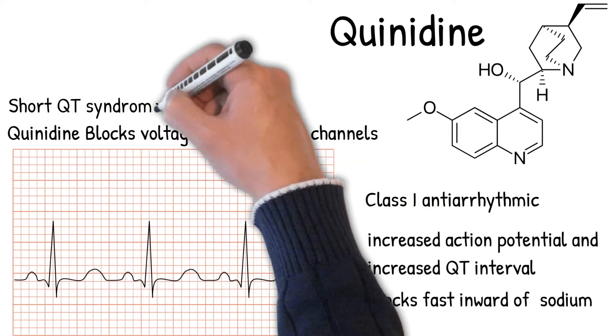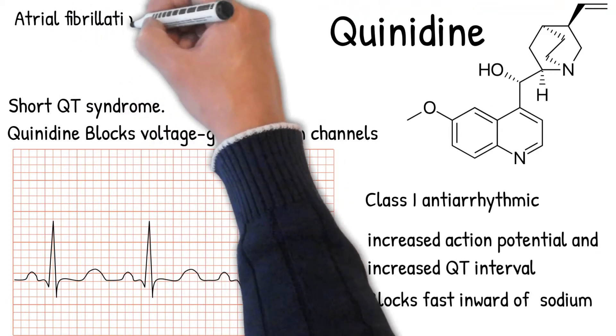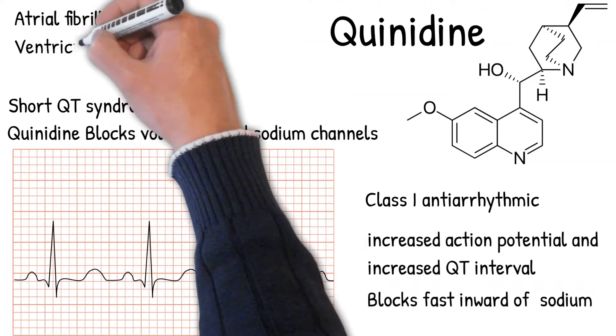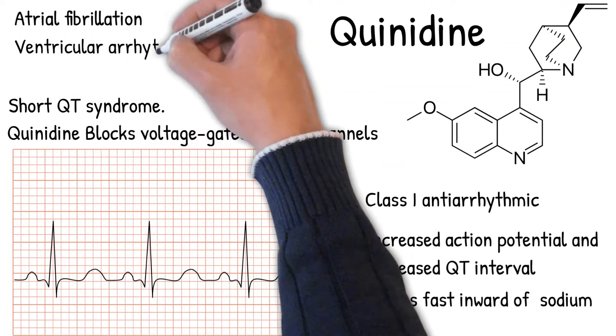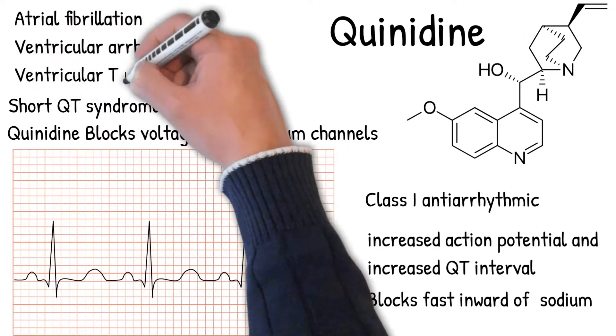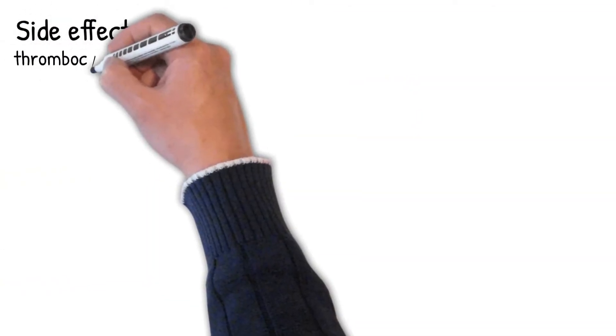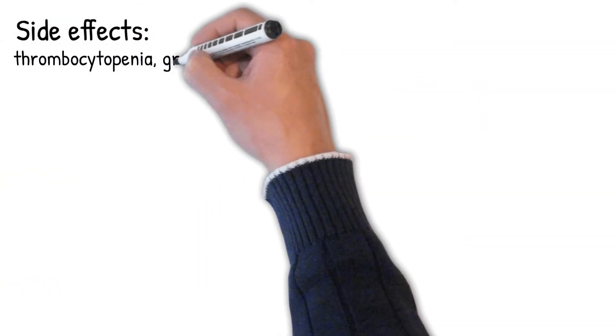Quinidine is occasionally used as a class 1 antiarrhythmic agent to prevent ventricular arrhythmias. In many countries, including USA, quinidine usage is limited due to its side effects.